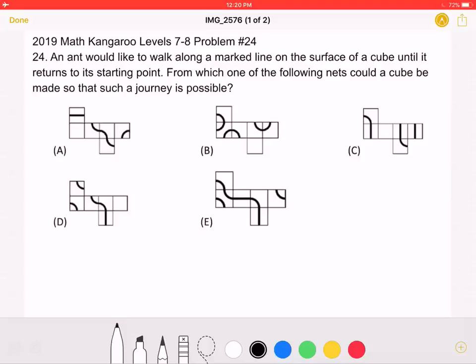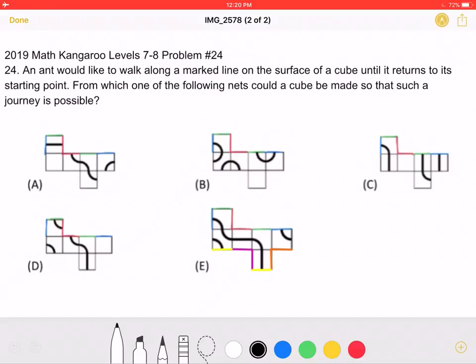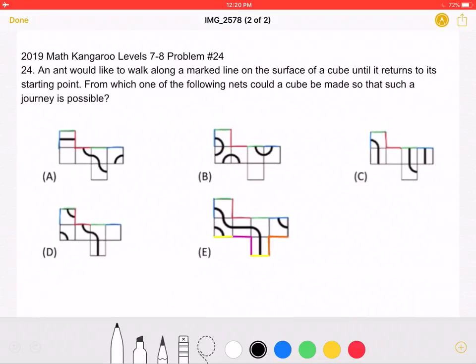This is the problem as it originally appeared on the test, and here is where we'll be doing the solution. To start, we want to find a cube that has a connecting path for the ant to walk on. The colored lines I have drawn correspond to where the edges of the cube would meet up if the net was folded.